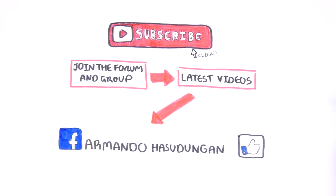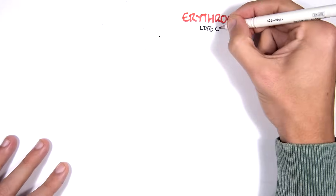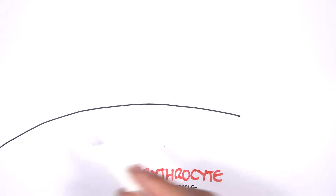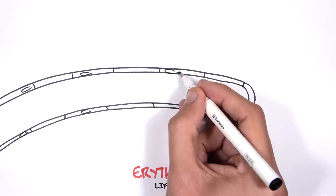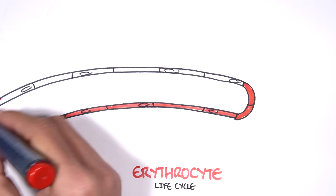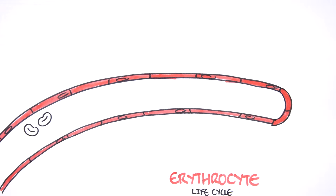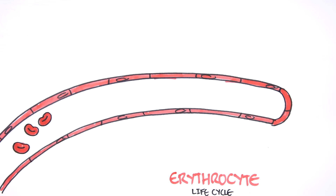In this video we're going to look at the red blood cell life cycle, or erythrocyte life cycle. Here I'm drawing a blood vessel. A blood vessel contains red blood cells. Here are mature red blood cells, and mature blood cells are responsible for transporting oxygen around our body.